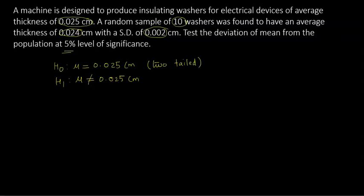Step 2: alpha is 0.05. Step 3: the test statistic is x-bar. Step 4: identify the critical region. At alpha equal to 0.05 with sample size 10, degrees of freedom are 10 minus 1 equals 9. The t-alpha critical value at 0.05 with 9 degrees of freedom for a two-tailed test is being looked up in the table.